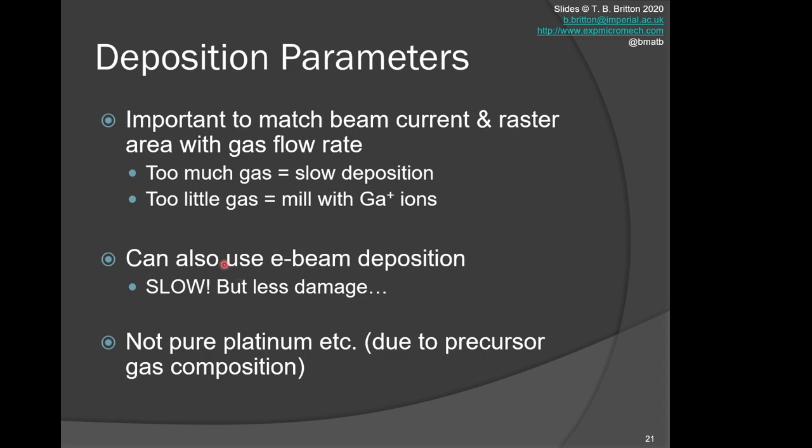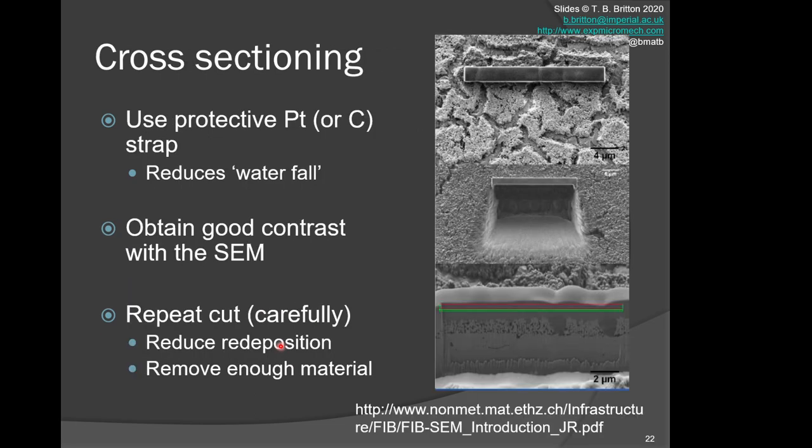You can also use electron beam deposition. This is very slow in comparison but significantly less damage, and this can be important if, for instance, you're doing semiconductor work. Recall it's not a pure metal deposition due to the precursor gas composition in the system.